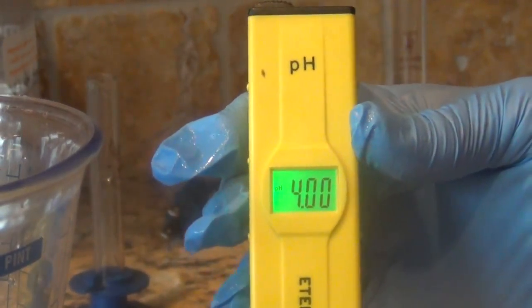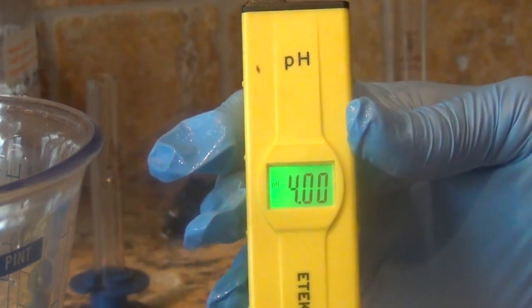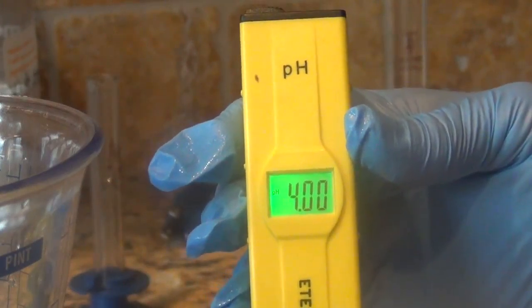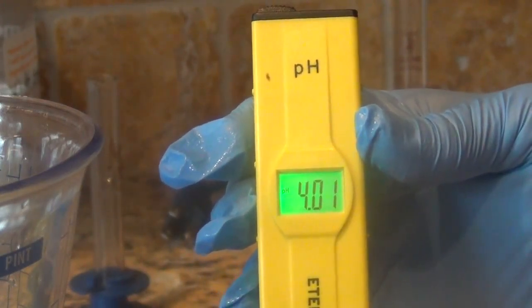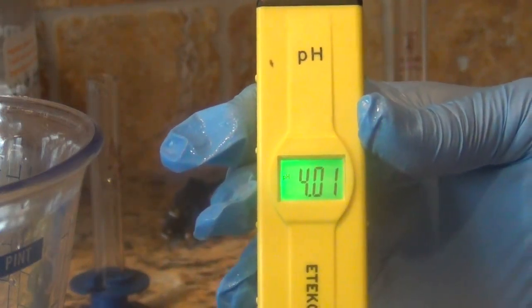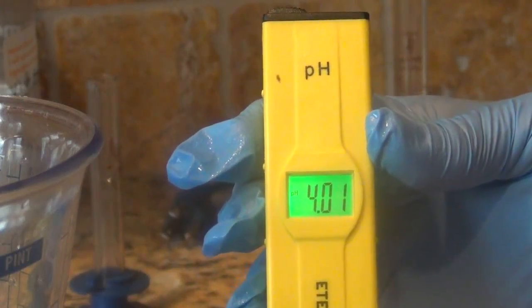If it jumps back and forth between 4.00 and 4.01, you want to try to figure out where it's holding the steadiest. So right now it's holding the steadiest at 4.0. When I move, the pH moves. That's how sensitive these things are.